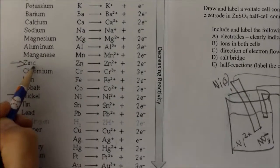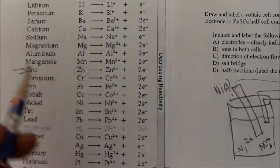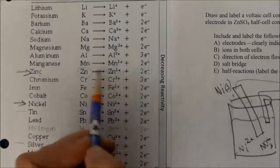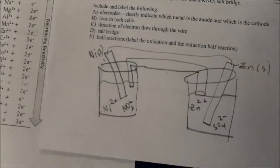Zinc is higher up which means the zinc will start out as a metal, give off electrons which will flow through the wire. So over here,